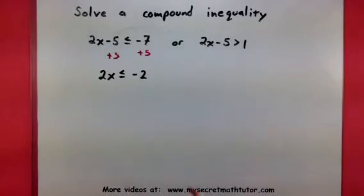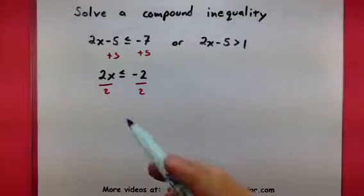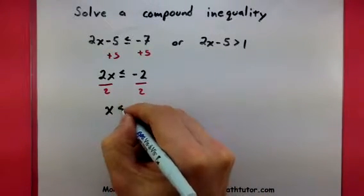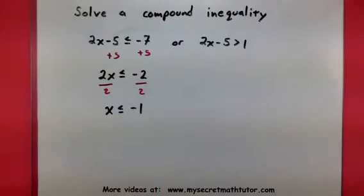Next I can divide by 2, and this will give me that X is less than or equal to negative 1. So this inequality is done, and we move over to the second one here.